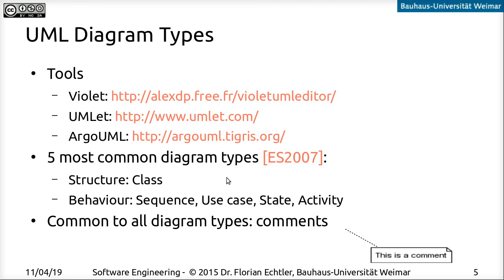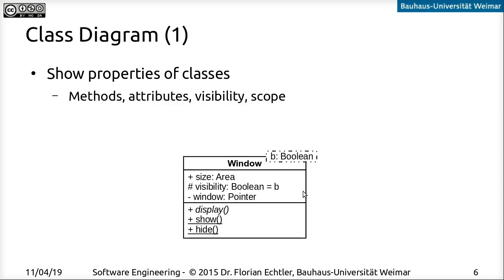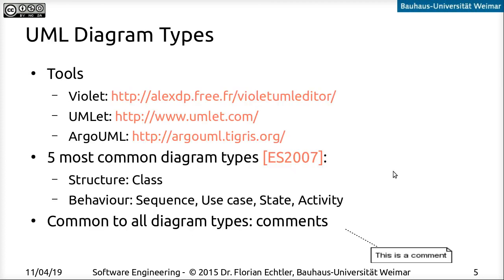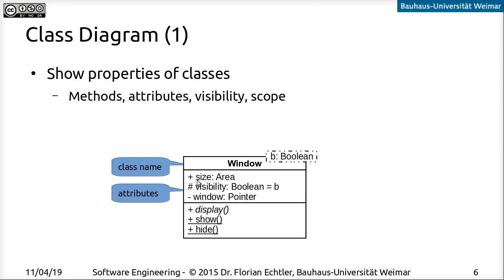Now let's look at the individual diagram types. First, the class diagram — this shows how a class is structured, covering almost all of the properties of a class, like we discussed in the recap of object-oriented programming. We have the class name in the first section, then the attributes — for example, size of the window, visibility, and a pointer maybe. Below that we have the methods. So those are the three main parts of a class in UML.